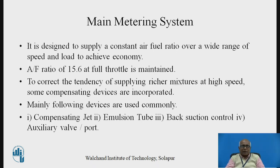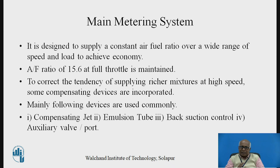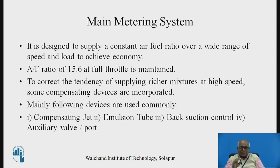Firstly, the main metering system. The main metering system is designed to supply a constant air-fuel ratio over a wide range of speed and load, with the purpose of achieving economy. For achieving economy, an air-fuel ratio of 15.6 to 16 is required to be maintained at full throttle, covering the major cruising range. To correct the tendency of supplying a richer mixture at high speed, compensating devices are incorporated. The main types of compensating devices are: first, compensating jet; second, emulsion tube; third, back section control; and fourth, auxiliary valve or port.